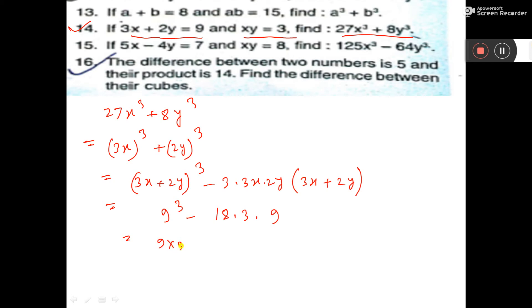So 9 into 9 into 9 minus, so this one is this and this one multiply and get this one.